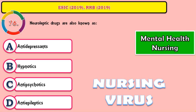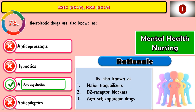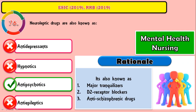Question number 76: Neuroleptic drugs are also known as? The answer is Major Tranquilizers, D2 Receptor Blockers, and Antischizophrenic drugs.